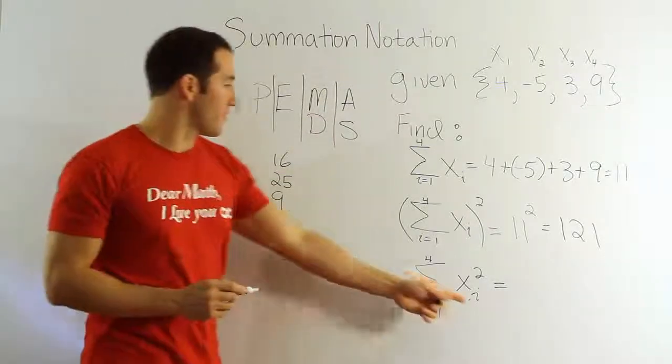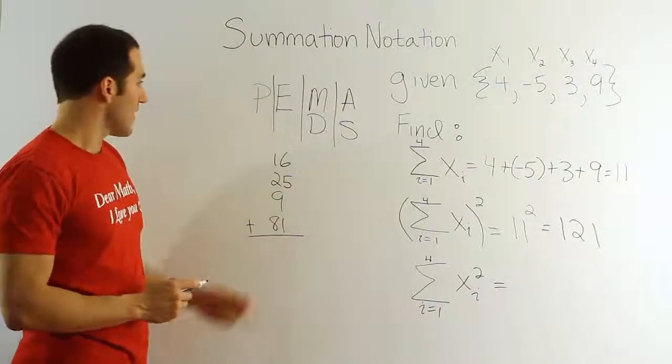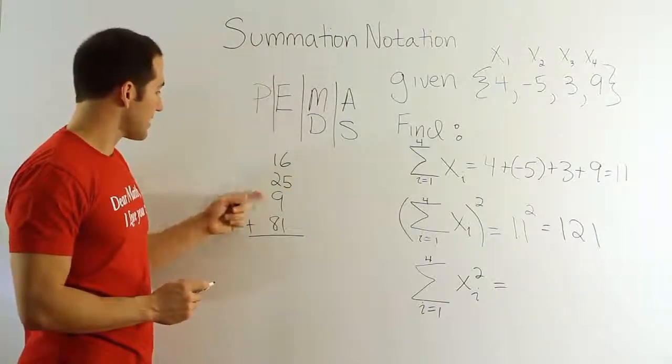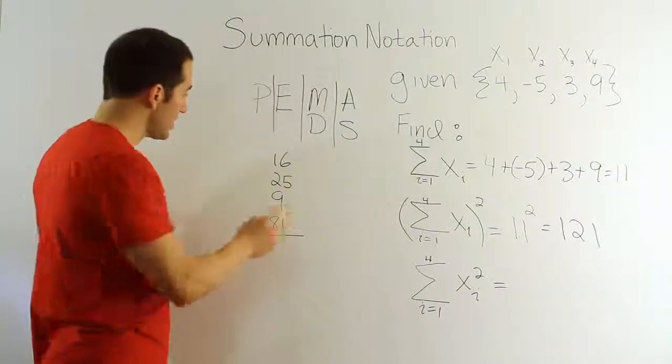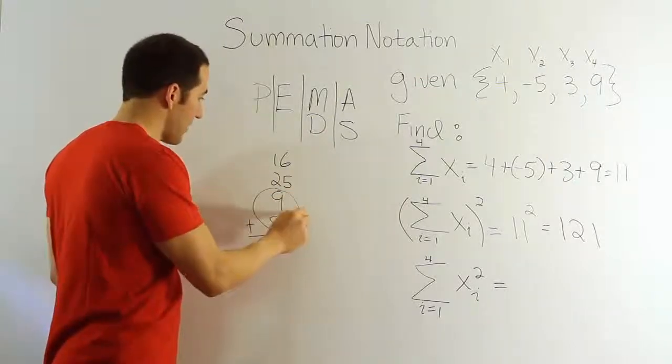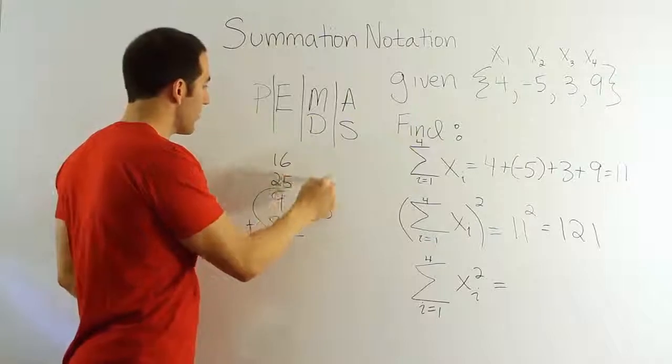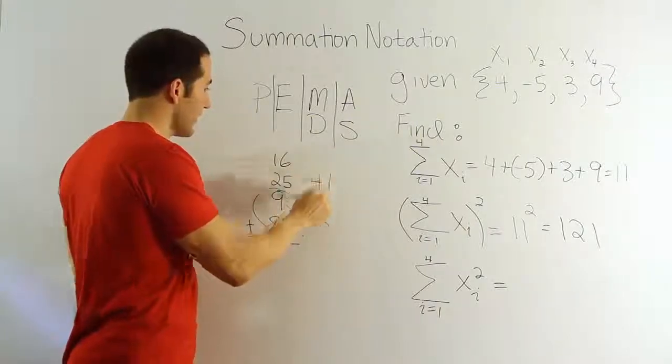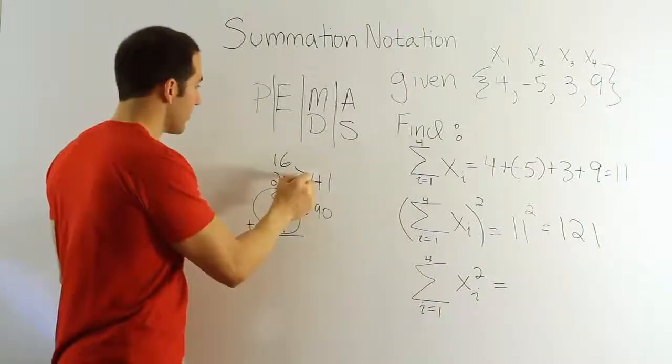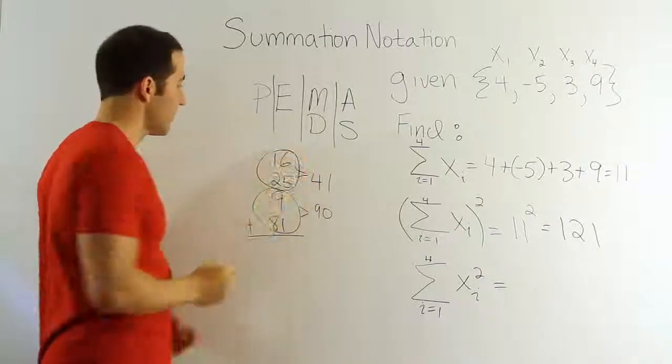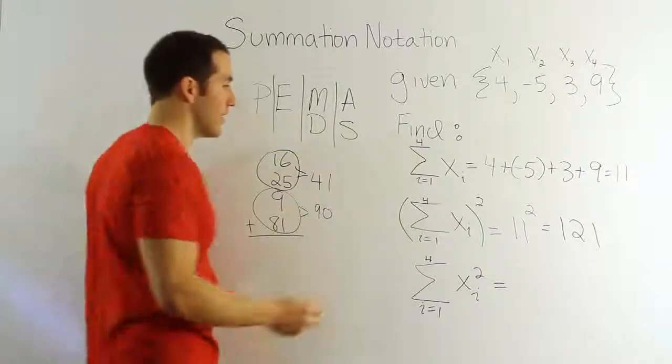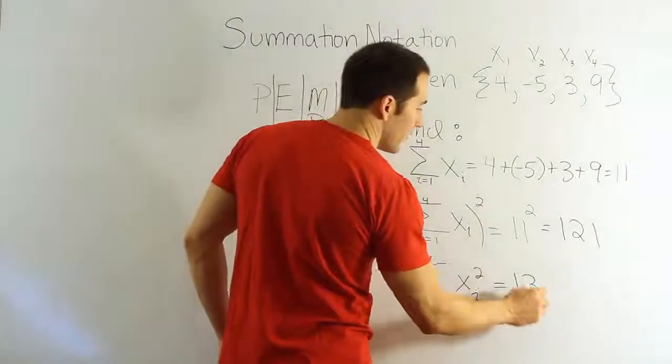Now we're supposed to add them up to finish this problem. So, I have to do 16 plus 25 plus 9 plus 81. These two make 90. And this makes 141, correct? So, together, we have a total of 131. The answer for this one is 131.